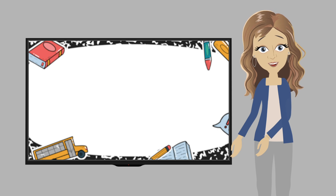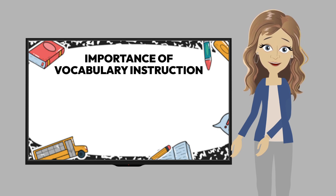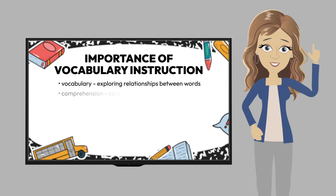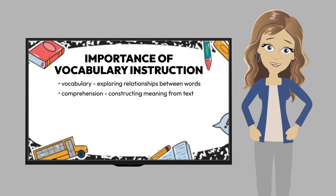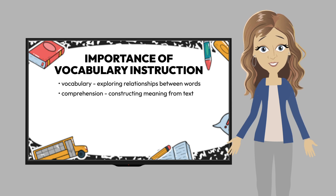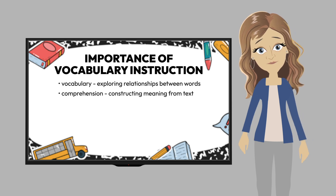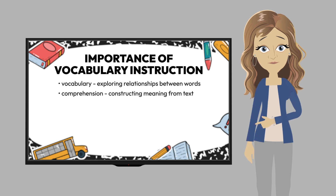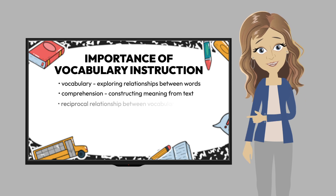This led us into a discussion about the importance of vocabulary and the connection between vocabulary and comprehension. Vocabulary is about exploring relationships between words, while comprehension is constructing meaning from text. The struggle for some of our readers is that they do not have a cognitive backpack full of strategies to help them determine the meaning of words they encounter. When students are unable to figure out word meaning, that impacts their ability to construct an understanding of a text, illustrating the reciprocal relationship between vocabulary and comprehension.